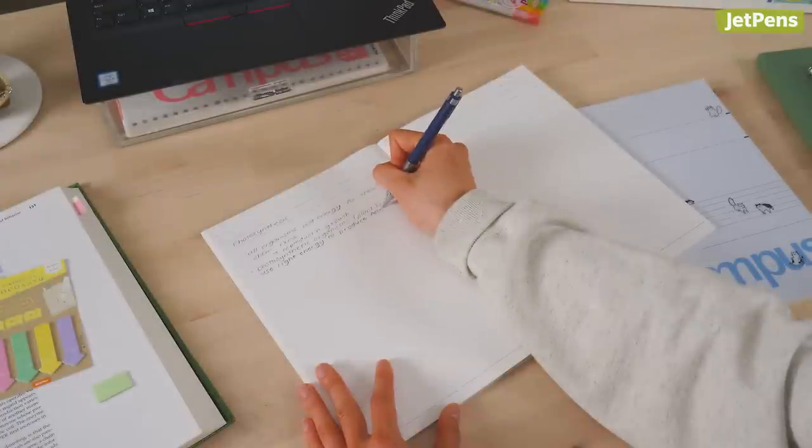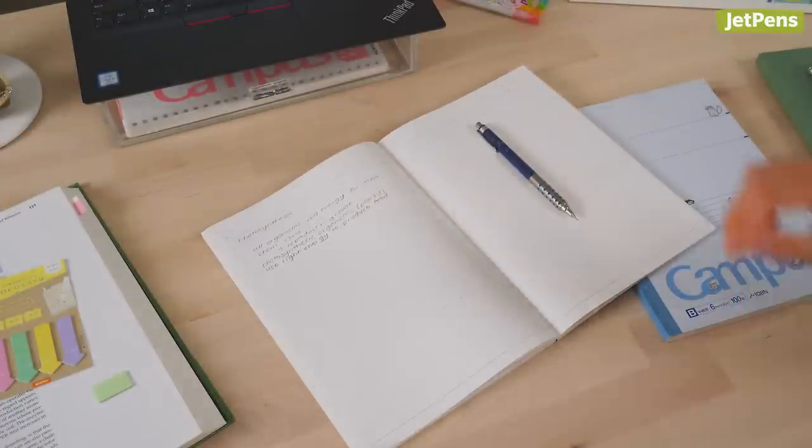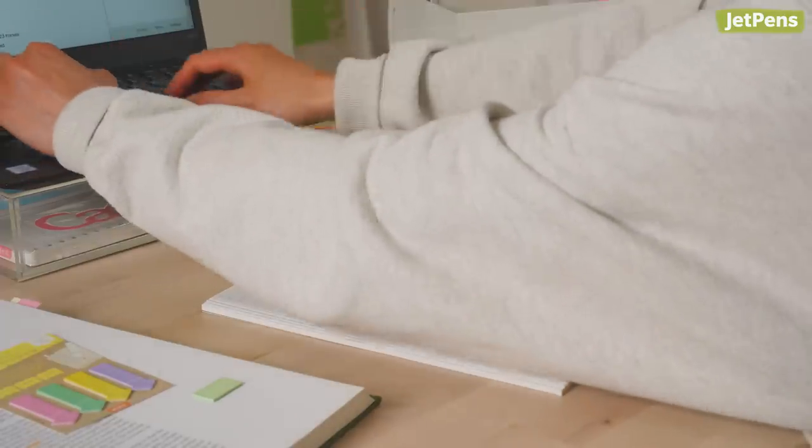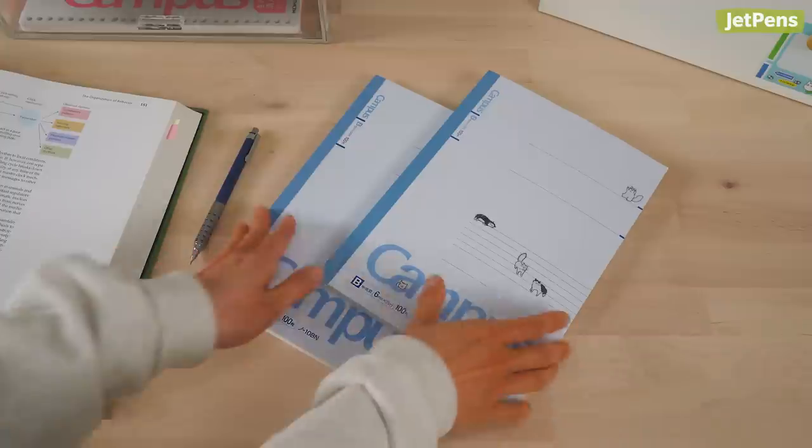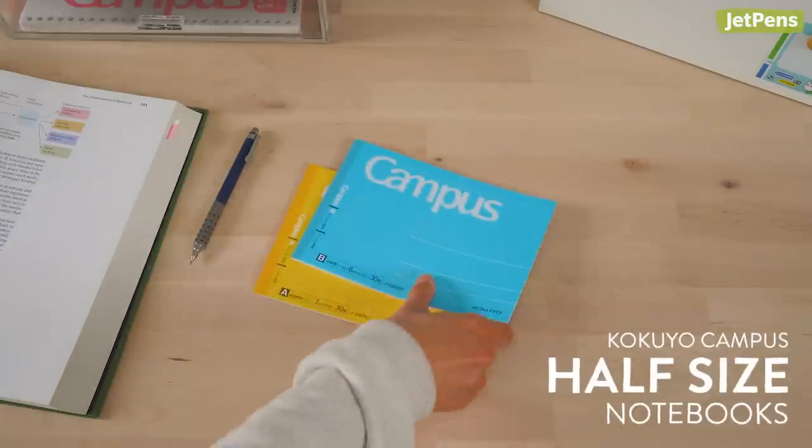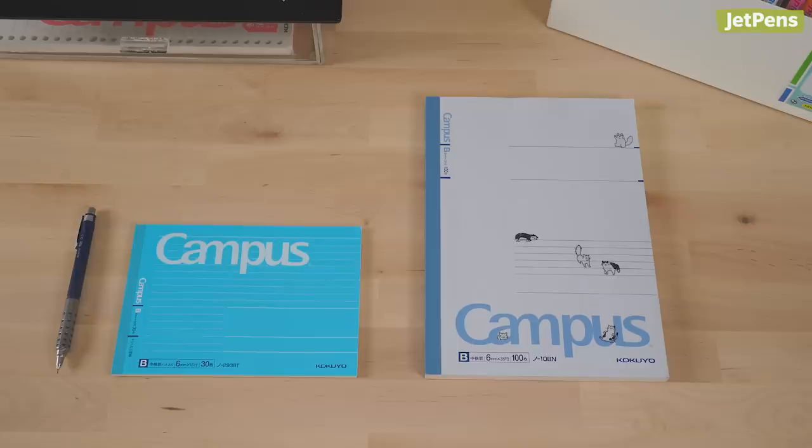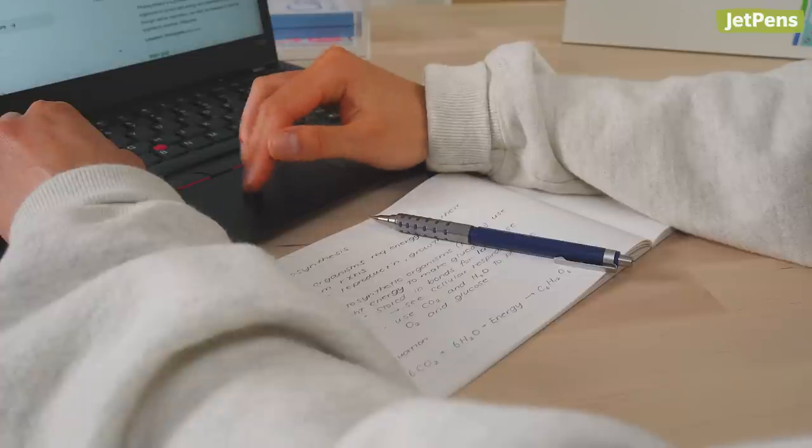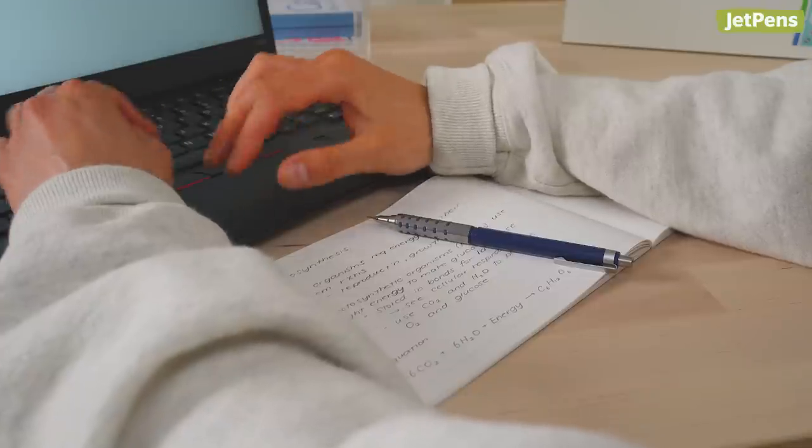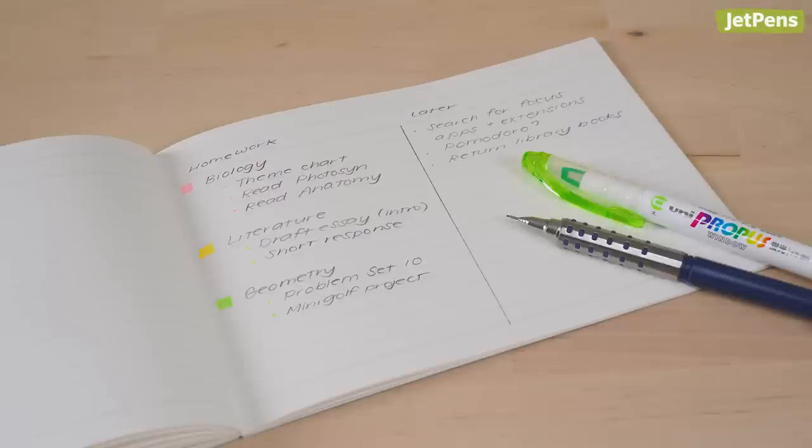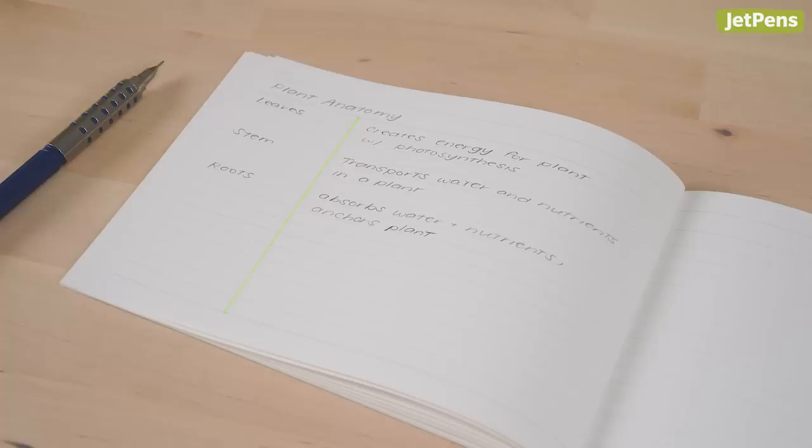Notebooks can take up a lot of space, forcing you to rearrange your belongings every time you write or type. To counter this issue, the Kokuyo Campus half-size notebook is half as tall as a standard B5 notebook, perfect for tucking in front of your laptop. The pages are printed in dot rule, so it's easy to make neatly organized lists, tables, and diagrams.